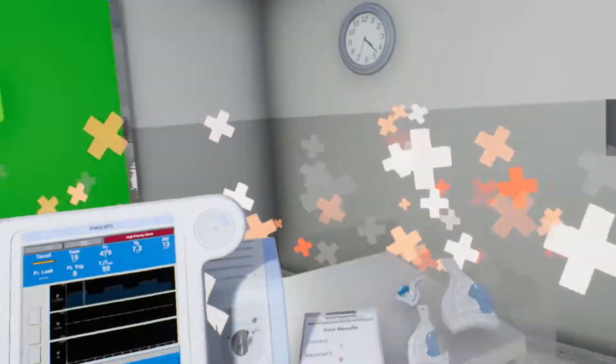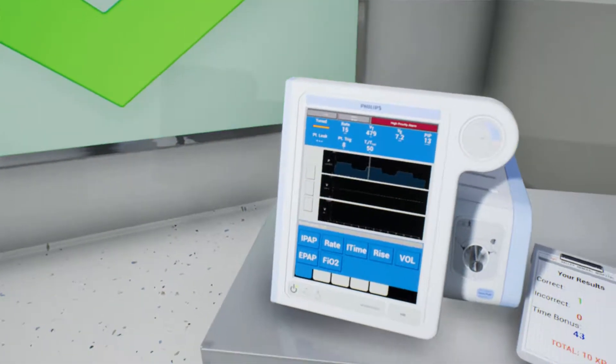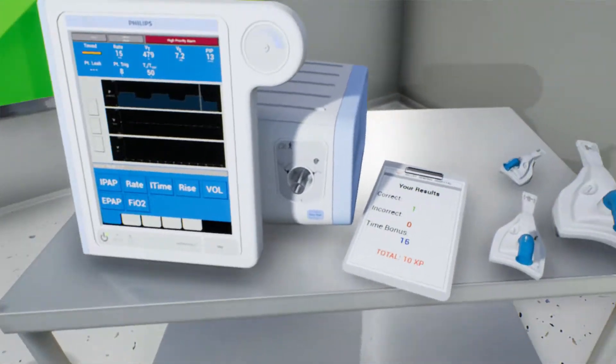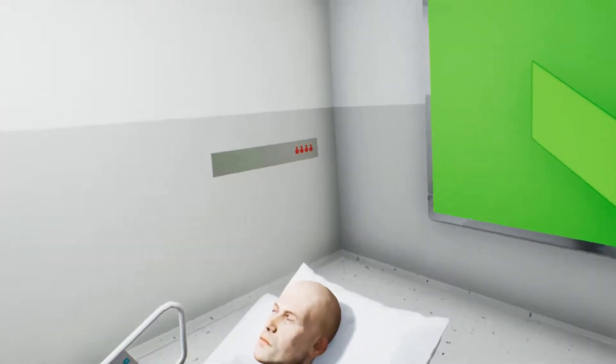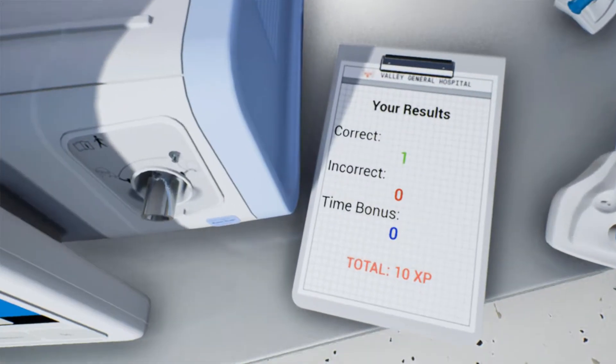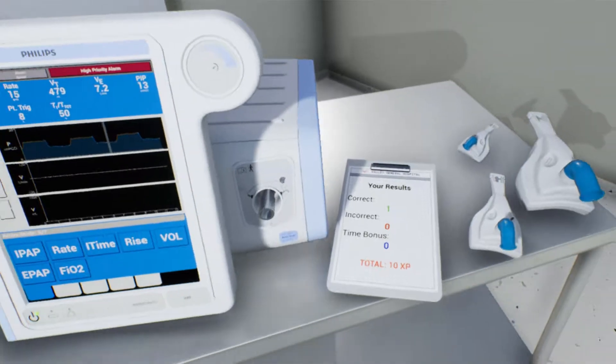Good. You are now in the acute care area of the emergency department. Today you will learn about a device for managing respiratory failure called the non-invasive ventilator or NIV. Now pick up an appropriately sized mask for the patient.